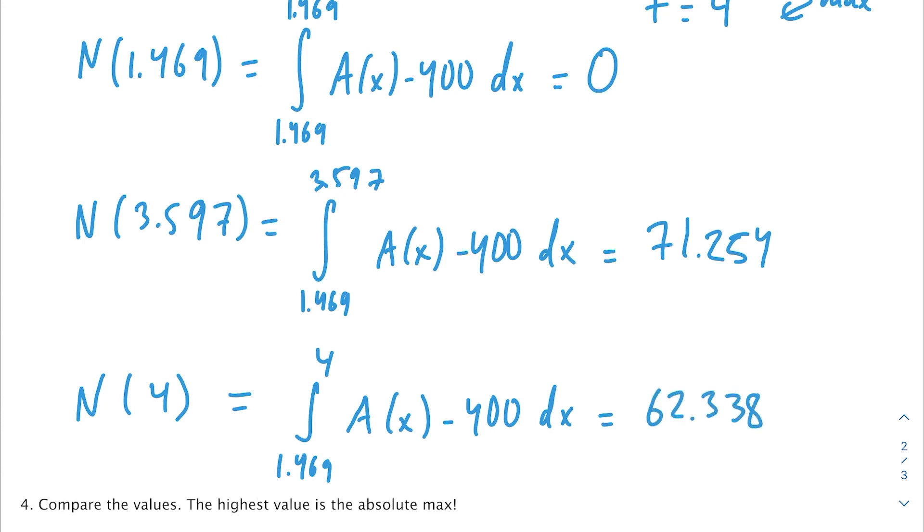Those are our three candidates. If you rank each of these answers, you're going to get that the greatest number of vehicles is this number. It happens at t equals 3.597. Since 71.254 isn't really a number of vehicles, we can round it down and say 71. So 71 vehicles is our final answer.